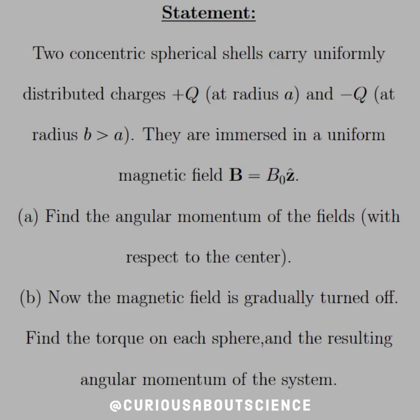Alright, we have a fun little tie-in from an old example, so I'll go ahead and note everything there. Our statement reads: two concentric shells carry a uniformly distributed charge plus Q at radius A and negative Q at radius B greater than A, and they are immersed in a uniform magnetic field B equal B naught Z hat direction. Part A, find the angular momentum of the fields with respect to the center, and then part B, now that the magnetic field is gradually turned off, find the torque on each sphere and the resulting angular momentum of the system.